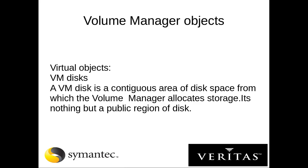We also have virtual objects, which are VM disks. A VM disk is a contiguous area of disk space from which the Volume Manager allocates storage — it is a public region. Once you start utilizing the disk, for example a partition or a block device shared from storage to your operating system, when the Volume Manager tries to allocate the space, that is called a VM disk. We take a normal disk and plug it into the Veritas Volume Manager for utilization.